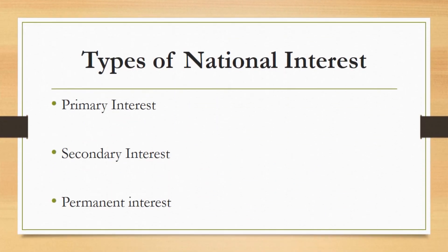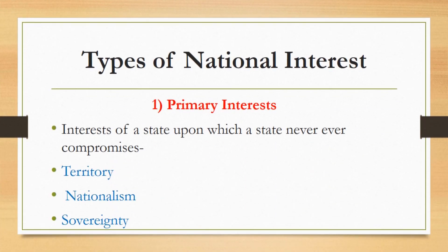There are three basic types of national interests: primary interests, secondary interests, and permanent interests. The first type is primary interests — these are the interests upon which a state never ever compromises. They include territory, nationalism, and sovereignty. These three interests are always dearest to all states.